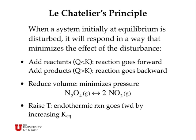This leads us to a more general consideration of a principle called Le Chatelier's principle: when a system initially at equilibrium is disturbed in some way, the system will respond in a way that minimizes the effect of the disturbance. So if we have a system at equilibrium and we add reactants, the reaction quotient Q — which is the concentration of products divided by reactants — is reduced below the level of K, and the reaction will proceed in the forward direction to increase Q until it once again equals K.